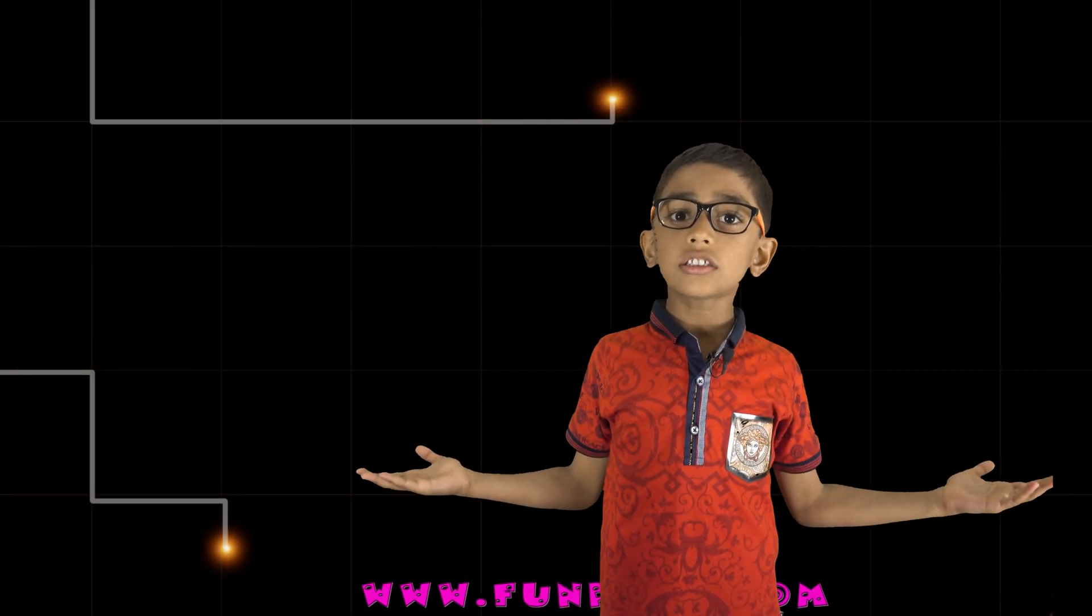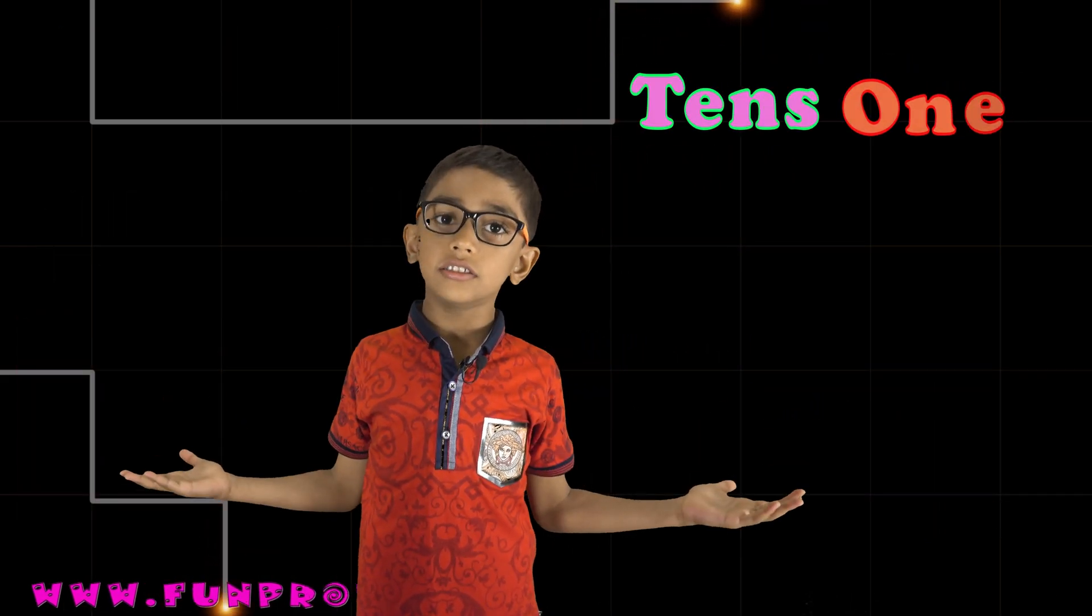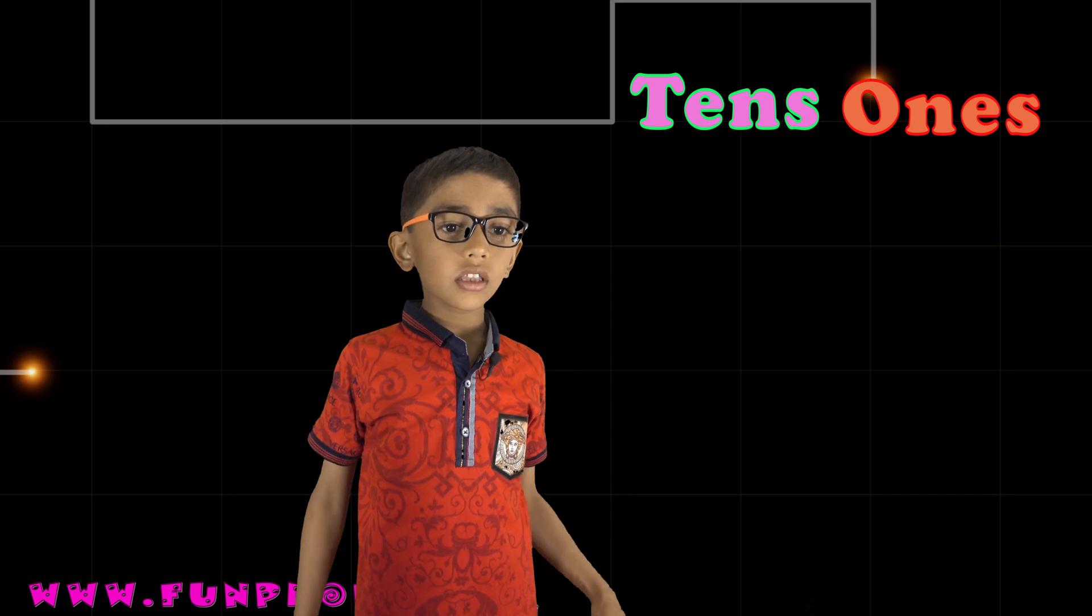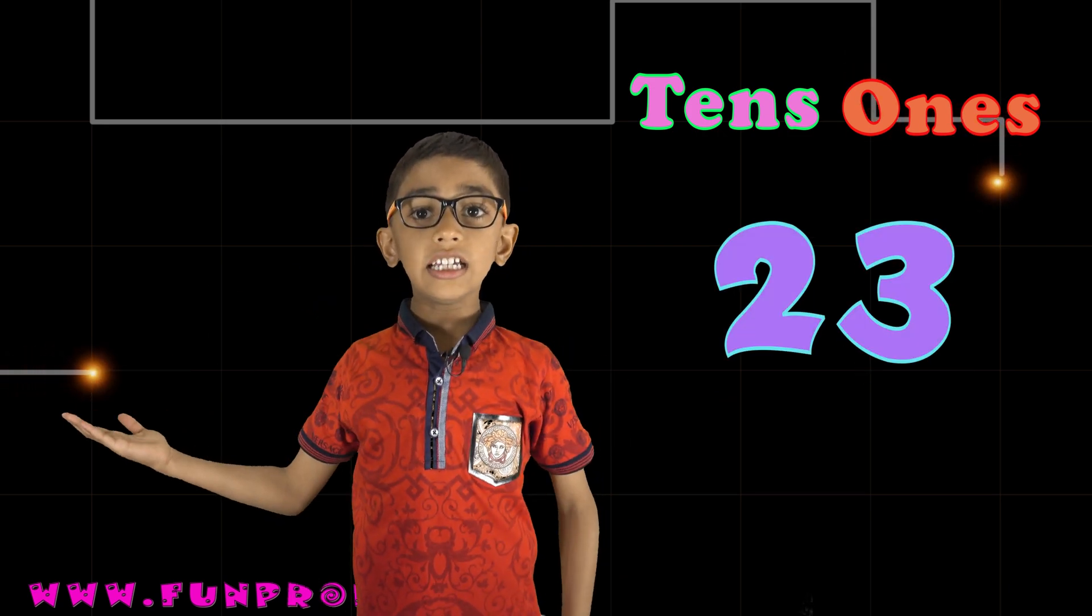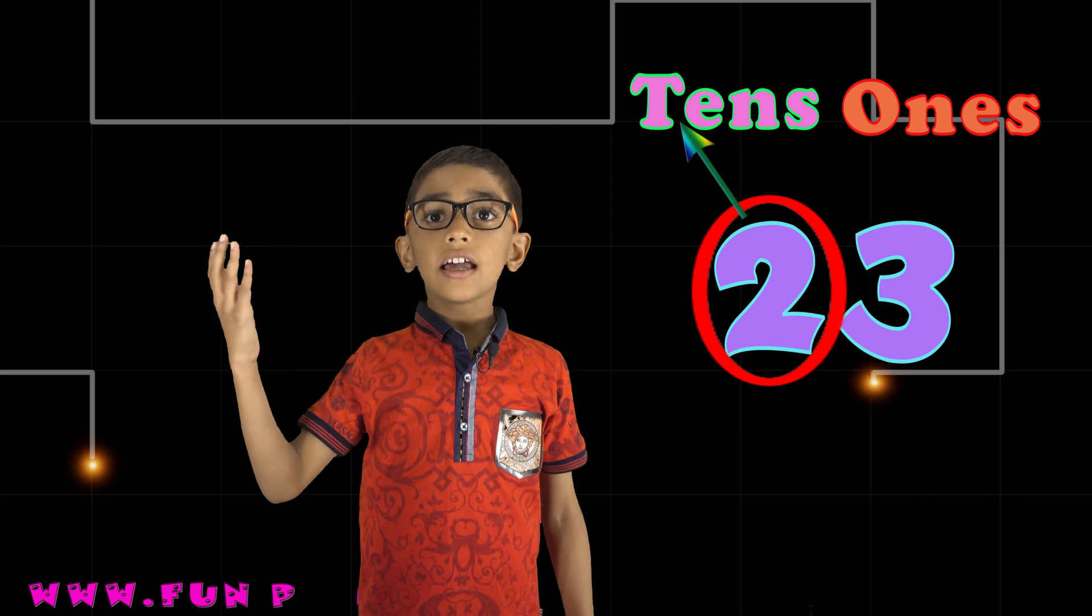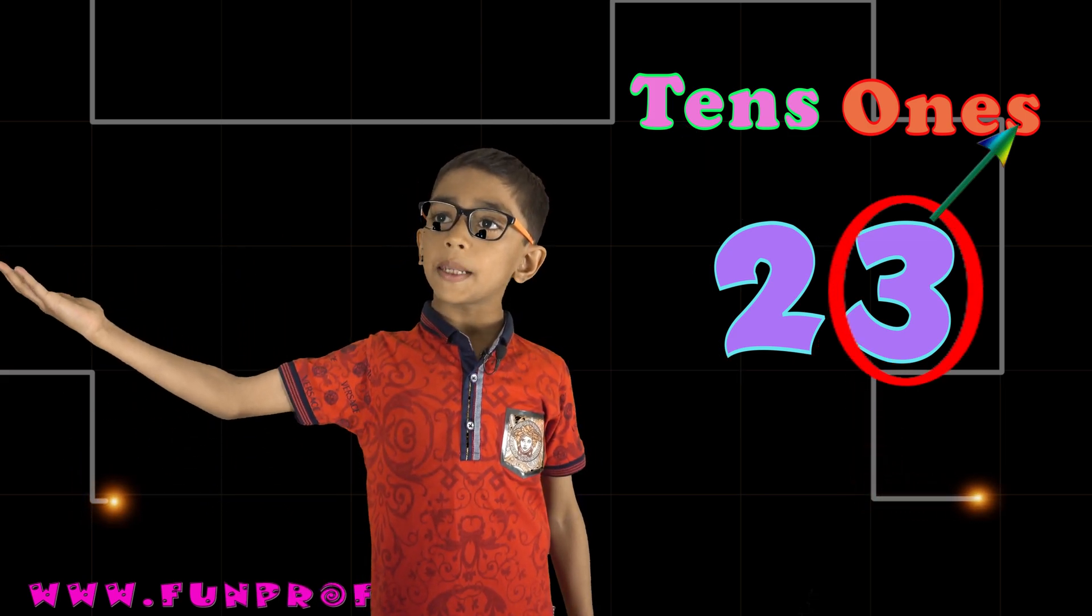Now let's do tens and ones. 23. 2 is at the tens place and 3 is at the ones place.